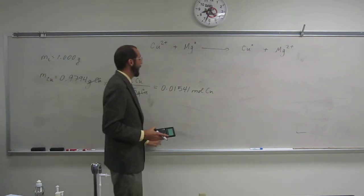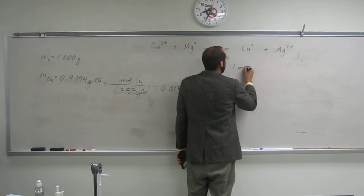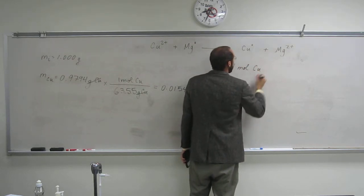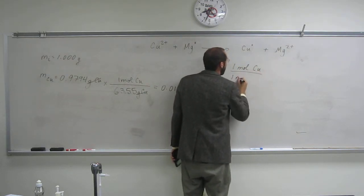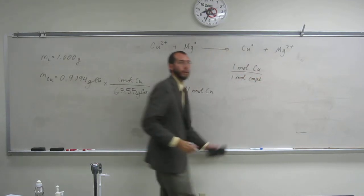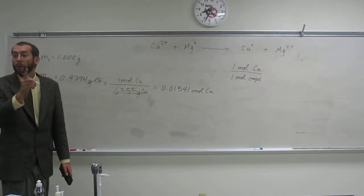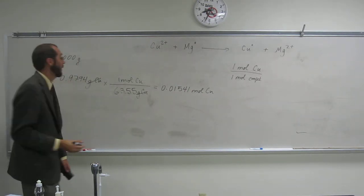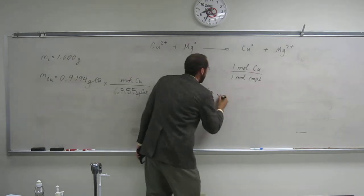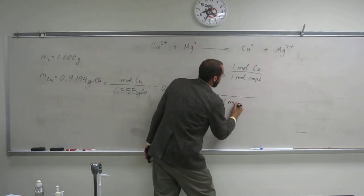So in order to figure out, well, so what is it saying? So it's one mole of Cu per one mole of the compound. Everybody's cool with that, right? Okay, because there's only one copper per compound. So let's just do that conversion just so everybody's on the same page.